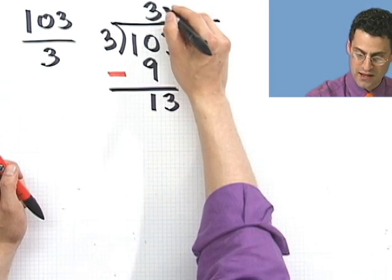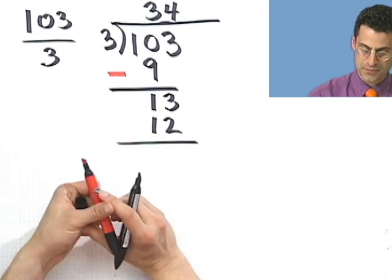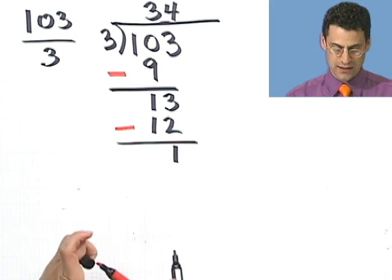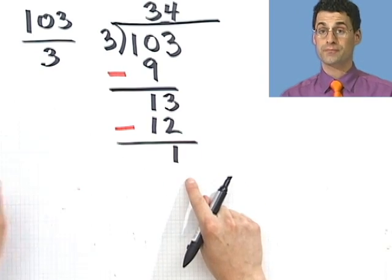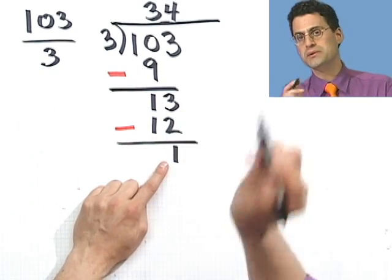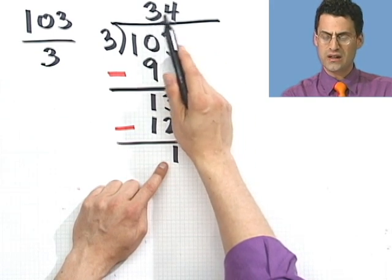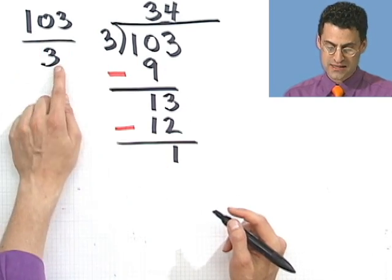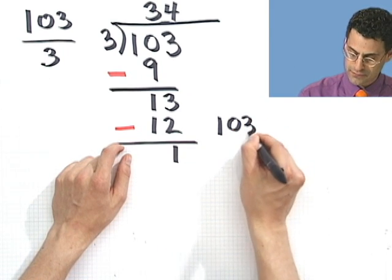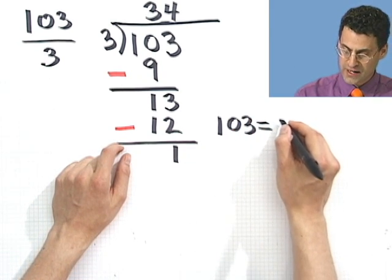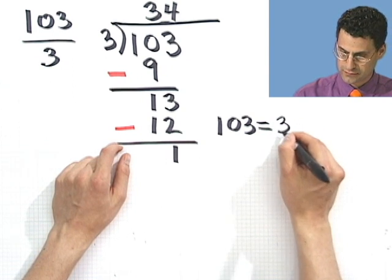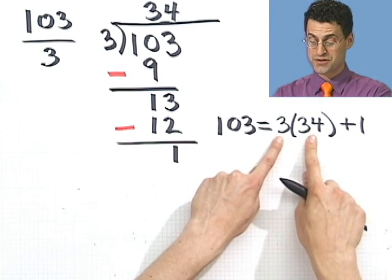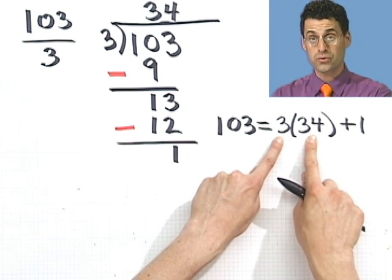And then 3 goes into 13 four times. I have a 12. And I subtract. And when I subtract, I have a 1. And since 1 is actually the end of the deal here, there's no more stuff here, that means this is the remainder. So this is the remainder. So sometimes we used to say when we were really, really young, you might not even remember this, we used to say, the answer is 34 remainder 1. And what does that mean? Well, what that means is one way of writing out this sort of relationship is that 103 equals 3 times 34 plus a remainder of 1. And you can check and see that 3 times 34 is 102. And then if you add 1, you get 103.